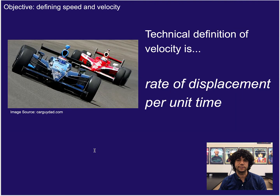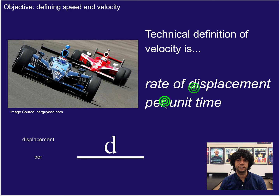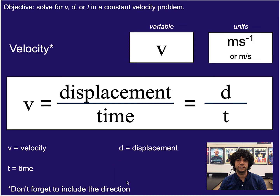Now let's talk about velocity. The technical definition looks very similar to speed, but notice we're using displacement — so it's the rate of displacement per unit time, or how far did you go each second. Remember that direction matters with it, so displacement carries a slightly different meaning than typical distance. We can still develop the formula as displacement per time, giving us v = d/t, where v stands for velocity and d stands for displacement. Don't forget to include direction when you report the answer.